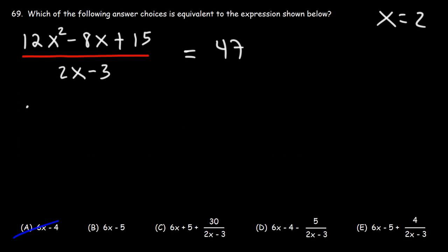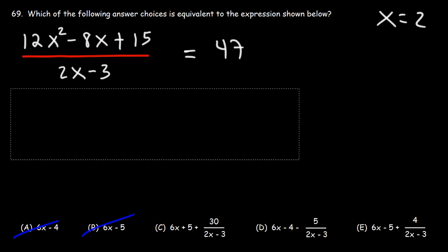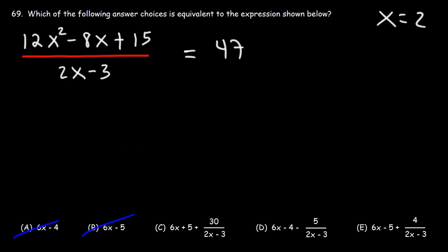Now let's repeat the process with answer choice B. 6 times 2 is 12. 12 minus 5 is 7. So that's not 47. Now let's try answer choice C.